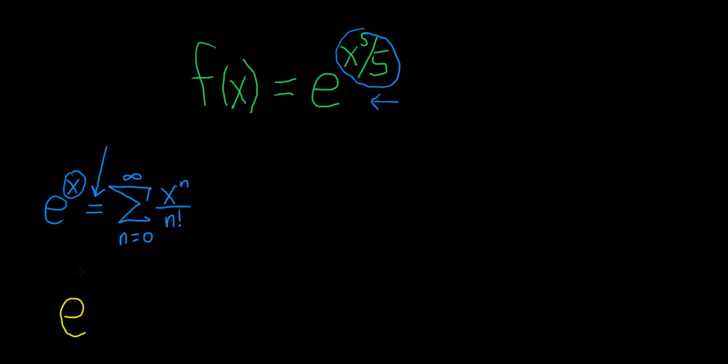So e to the x to the 5 over 5 is equal to the infinite sum, and that runs from n equals 0 to infinity. And then just replace the x with x to the 5 over 5.